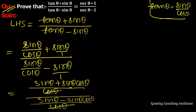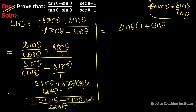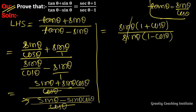The cos θ terms cancel, and if we factor out sin θ, the numerator becomes sin θ(1 + cos θ) and the denominator becomes sin θ(1 - cos θ). The sin θ cancels, giving us (1 + cos θ)/(1 - cos θ).